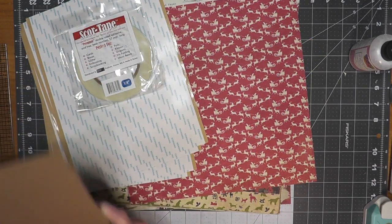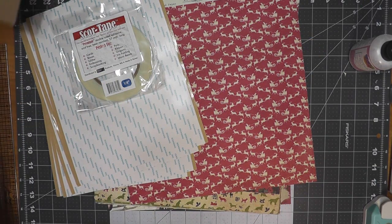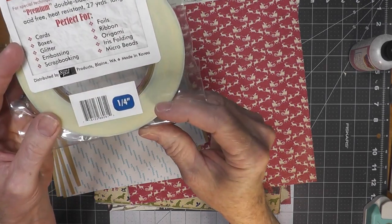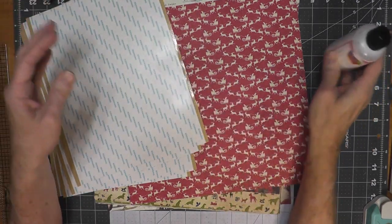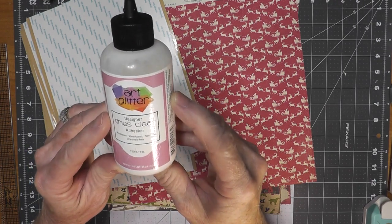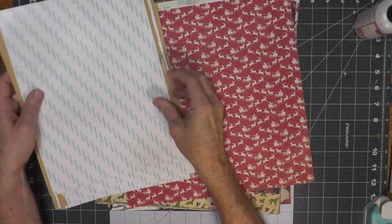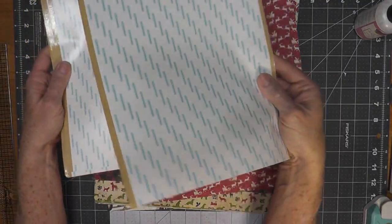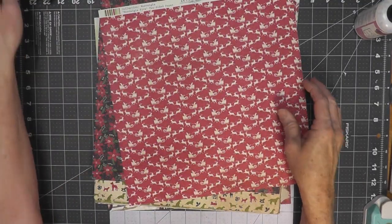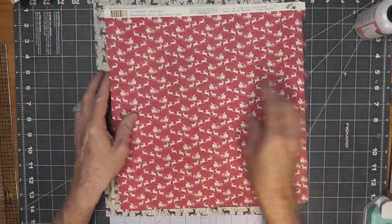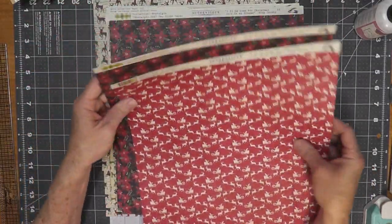The supplies that you will need: you'll want to have 8.5x11 chipboard, you'll need at least two or three pieces, you'll need quarter inch score tape. Of course you're going to need the Art Glitter Glue, this is the best glue and you can order it from CountryCraftCreations.com. If you have these score tape sheets, these are great for your covers. You can use glue instead and of course the paper collection which is the 12x12 Authentique Nostalgia.